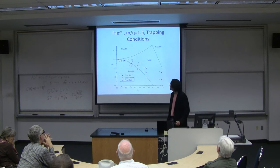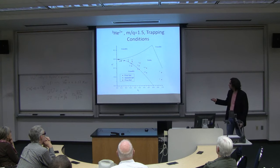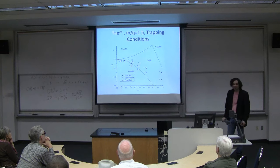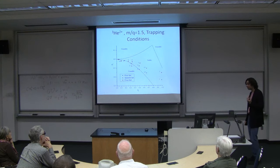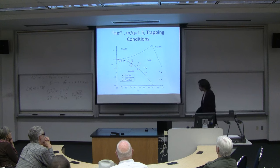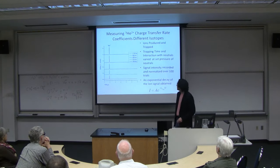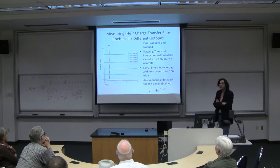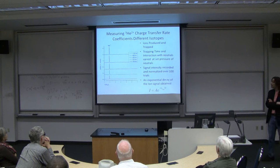These are the conditions I used to isolate mass-to-charge 1.5: eliminating protons and singly-charged helium-3 and helium-4, eventually reaching a stable position for doubly-charged helium-3. And here it is — clean. I was able to get just the mass-to-charge 1.5 helium-3²⁺ with nothing else there.